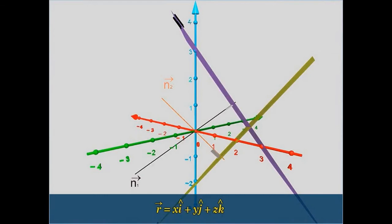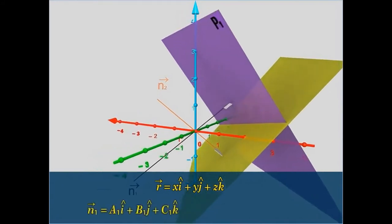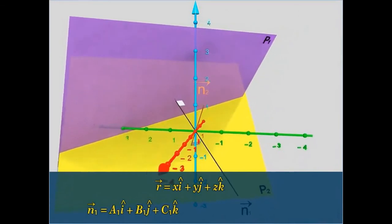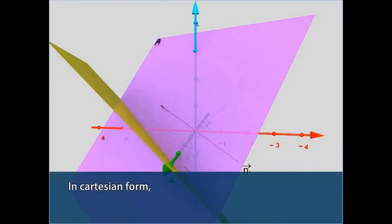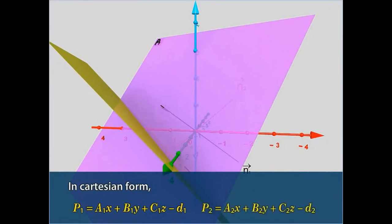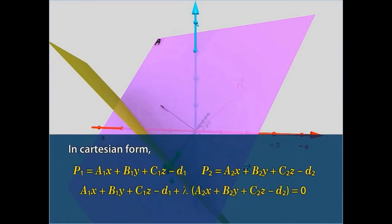In component form, vector R can be written as x cap i plus y cap j plus z cap k. Vector N1 can be written as a1 cap i plus b1 cap j plus c1 cap k. In Cartesian form, the equation of the plane passing through the intersection of two planes is given by: if P1 represents a1x plus b1y plus c1z minus d1 and P2 represents a2x plus b2y plus c2z minus d2, then the equation of the new plane becomes a1x plus b1y plus c1z minus d1 plus lambda times a2x plus b2y plus c2z minus d2 equals 0, i.e., P1 plus lambda P2 equals 0.